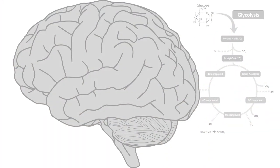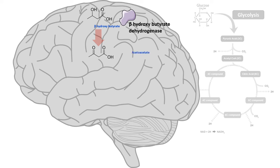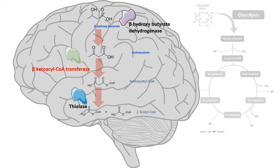The ketone bodies that come into the brain would be metabolized. The major ketone body in the brain during the fasted state is beta-hydroxybutyrate, which is converted to acetoacetate by the enzyme beta-hydroxybutyrate dehydrogenase. Acetoacetate is then converted to acetoacetyl-CoA by beta-ketoacyl-CoA transferase. This transferase enzyme is exclusive to the brain and gives the brain the ability to utilize ketone bodies. The liver can only generate ketone bodies — it cannot utilize them. But as an extra-hepatic tissue, the brain can utilize ketone bodies, ultimately giving rise to acetyl-CoA.